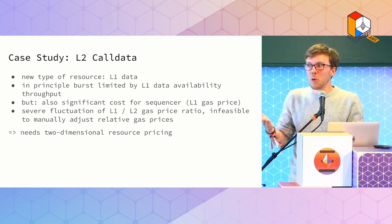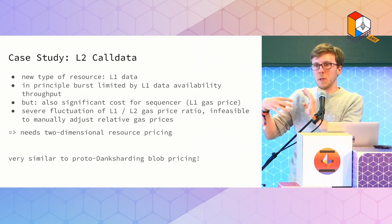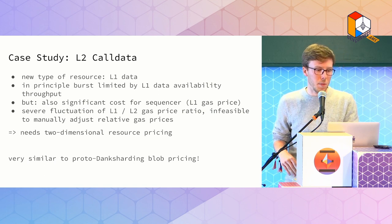It turns out this is also very similar to the problem of another type of resource we're about to introduce on Mainnet. That's the proto-danksharding EIP-4844 blob transaction pricing. That's a new type of data that would really want to be separately priced. So it's very similar here.